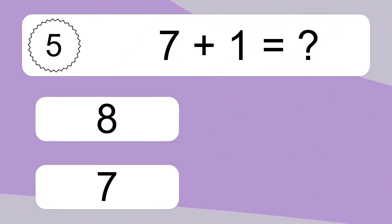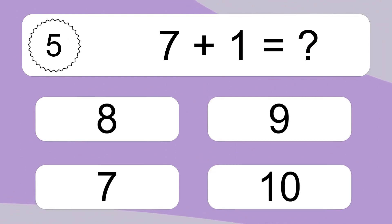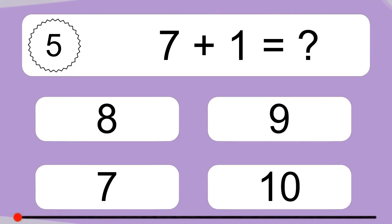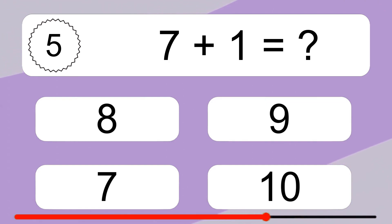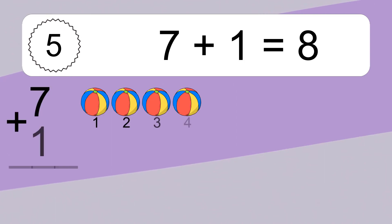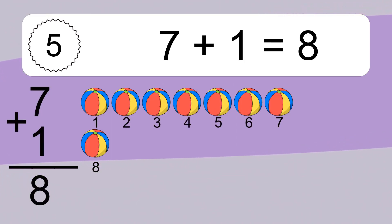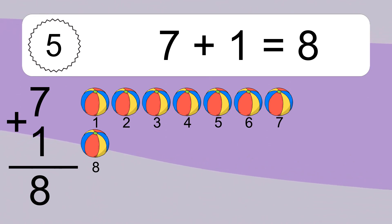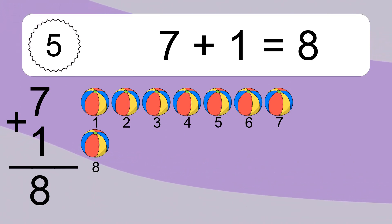7 plus 1 equals what? 7 plus 1 equals 8. Let's count it. 1, 2, 3, 4, 5, 6, 7, 8.